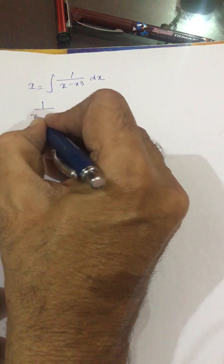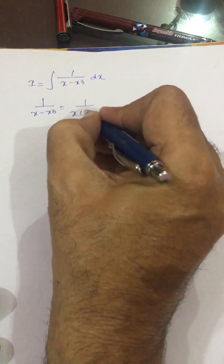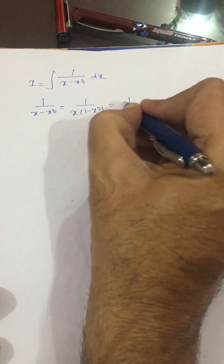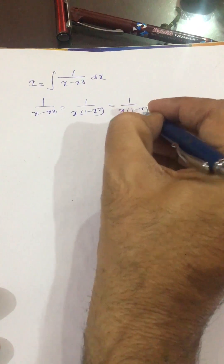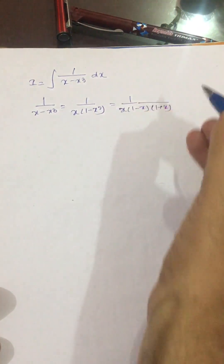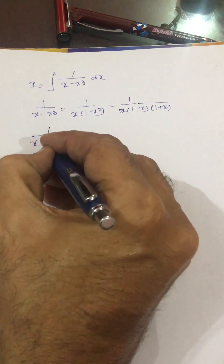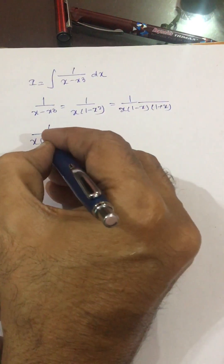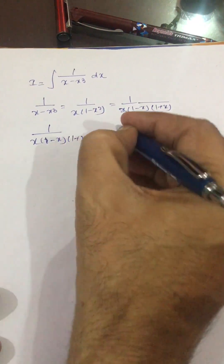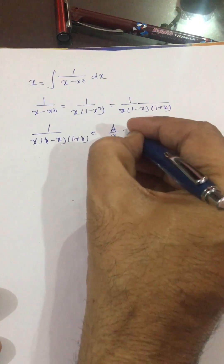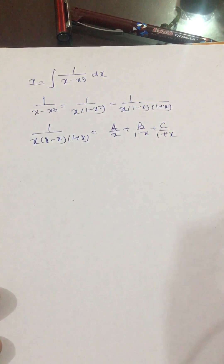We can write the denominator as x times (1 minus x) times (1 plus x), since x minus x cubed equals x(1 minus x squared). So 1 over x(1 minus x)(1 plus x) equals A over x plus B over (1 minus x) plus C over (1 plus x).